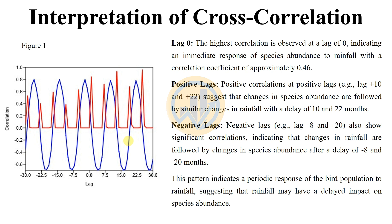In the interpretation of Figure 1, the lag values range from minus 30 to plus 30. At lag 0, the highest correlation was observed, indicating an immediate response of species habitat to rainfall, with a correlation coefficient of approximately 0.46.